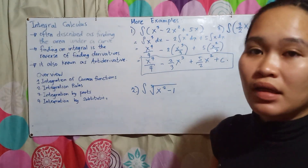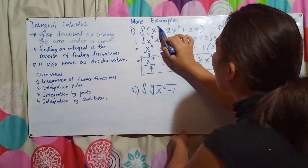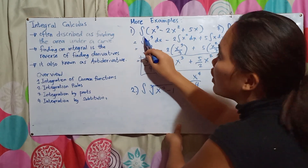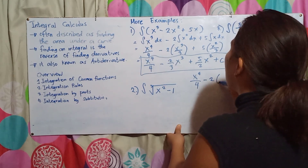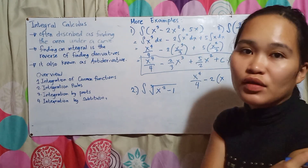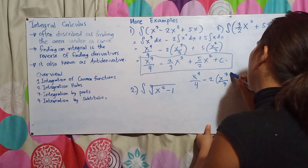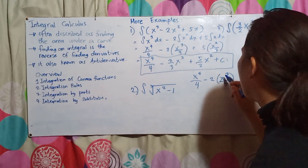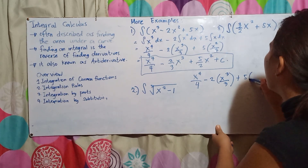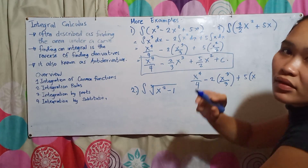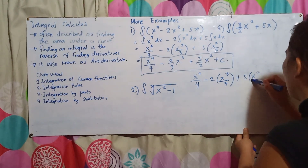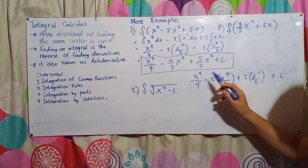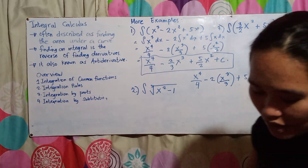Always bear in mind: add 1 to the exponent. For the shortcut: if the exponent is 3, add 1 to get 4, so you get x⁴/4. For −2x², add 1 to get 3, giving −2x³/3. For 5x, add 1 to get 2, giving 5x²/2. Plus C at the end.